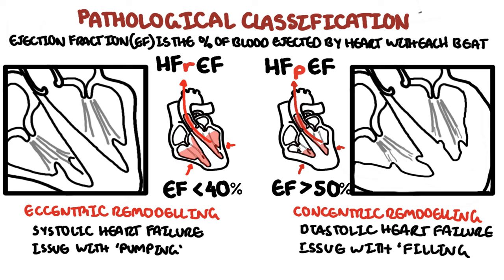The distinction between HFrEF and HFpEF is important because the treatment of these two groups differs. Patients with an ejection fraction of 41% to 55% are classified as heart failure with preserved ejection fraction borderline, and they are usually treated the same.